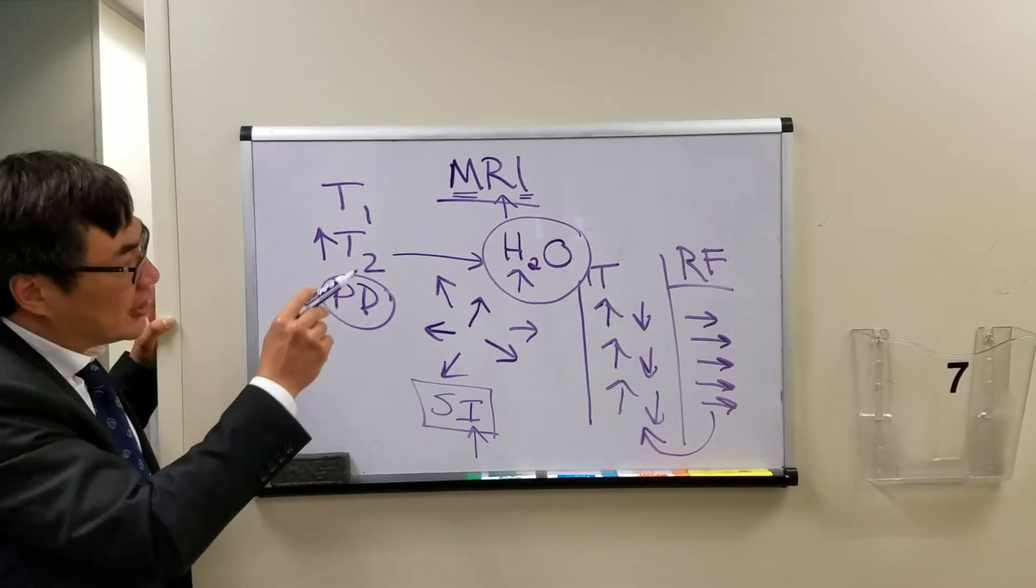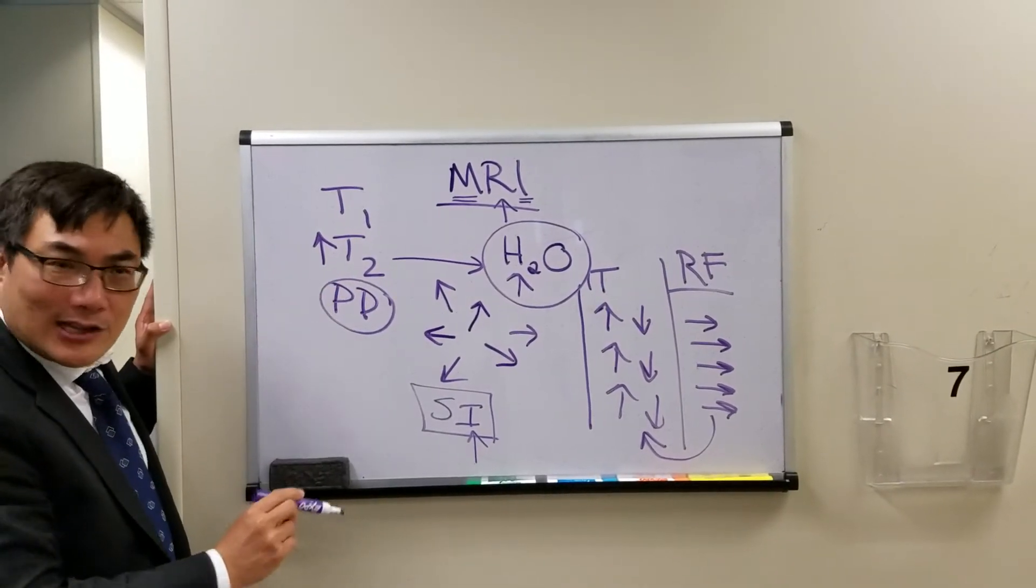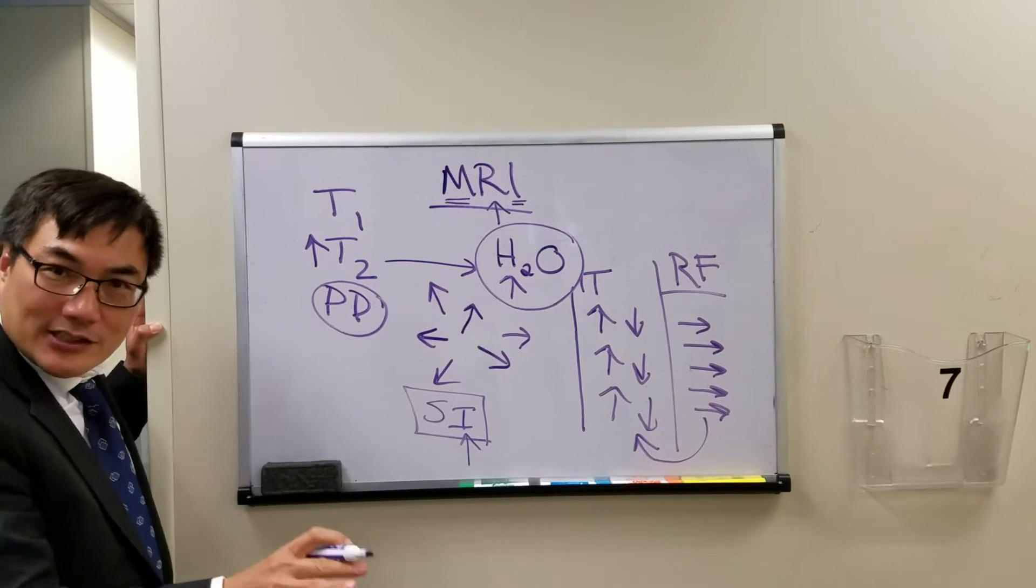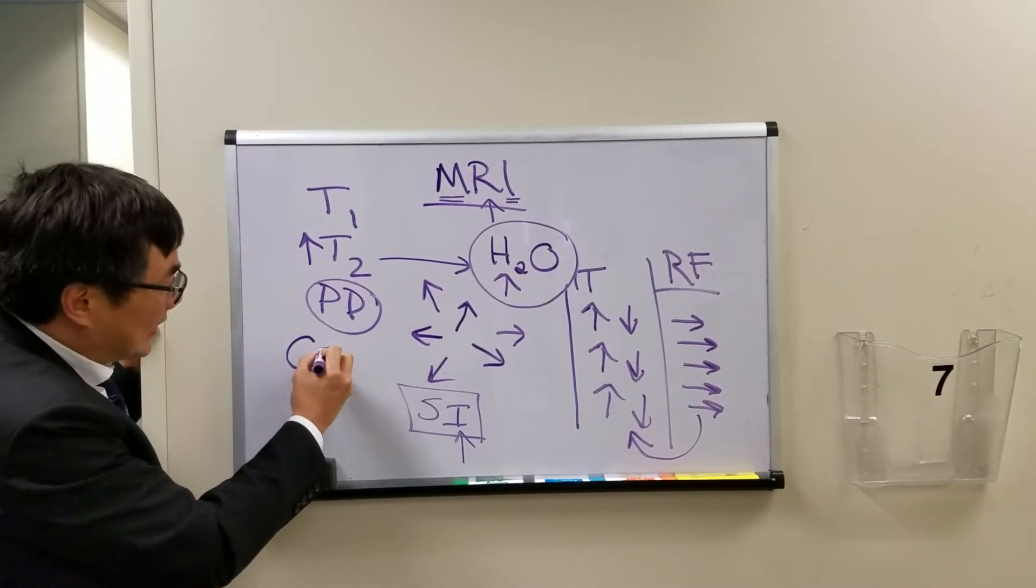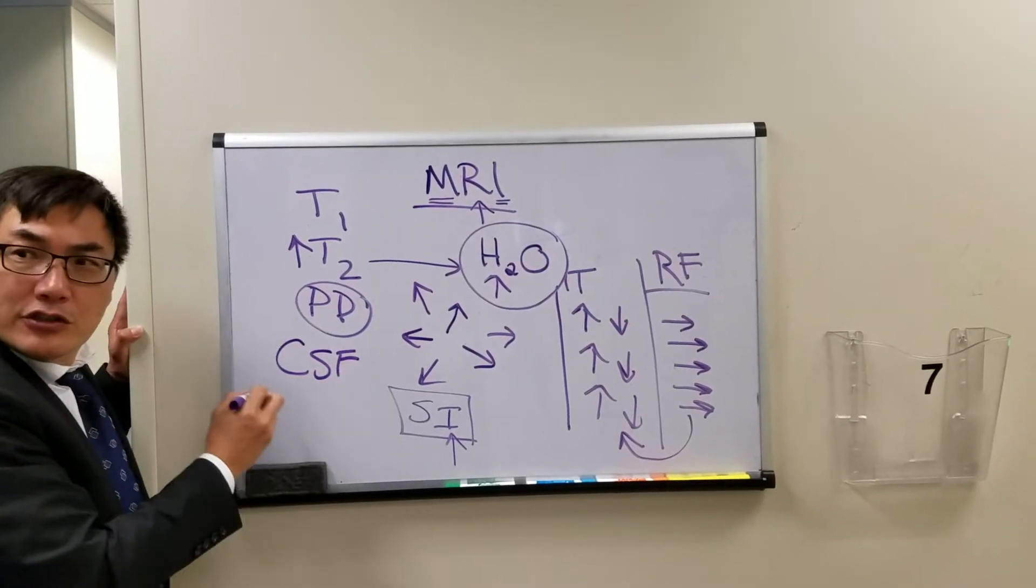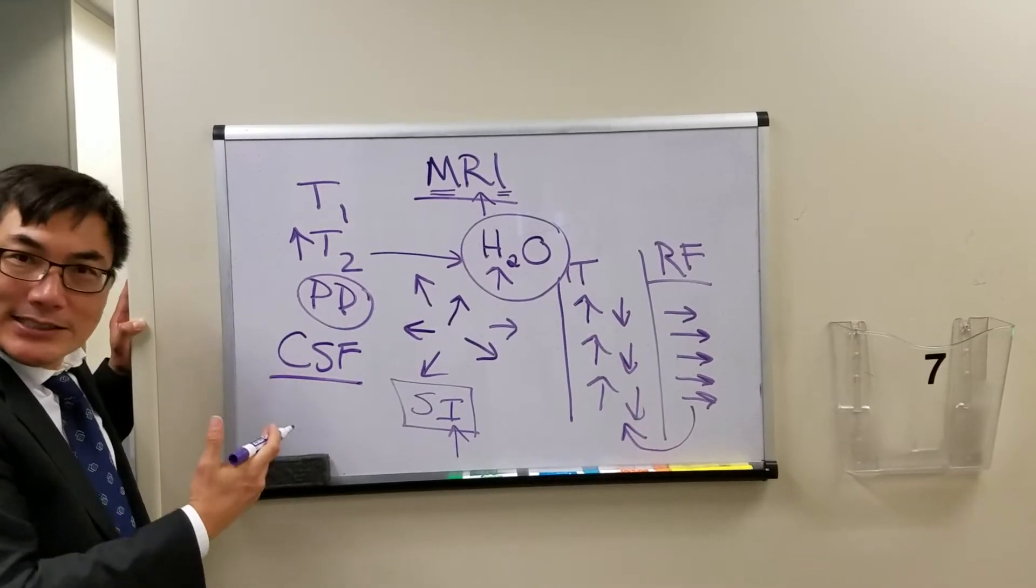Now, we have a problem on T2 because there's this other substance in the brain that has a lot of water that is not pathologic, it's normal, and that is cerebral spinal fluid. So the cerebral spinal fluid is very bright on T2.